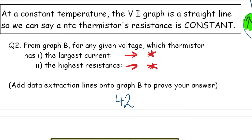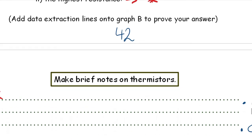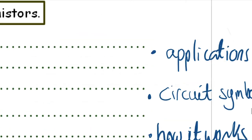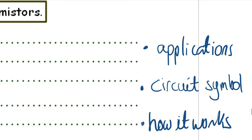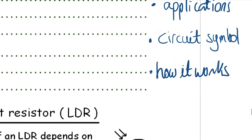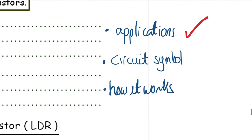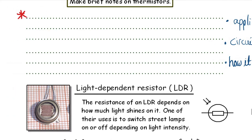You can do some research online on applications of thermistors. Show the circuit symbol and explain how it works. The most important thing is to include applications - where you need something that's temperature-controlled, such as an electric oven, air conditioning, or a central heating system where you need to maintain a constant temperature.